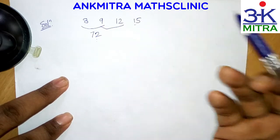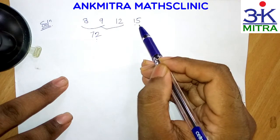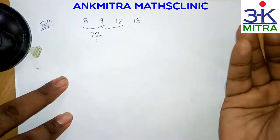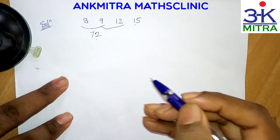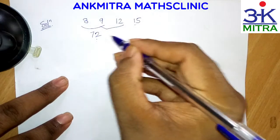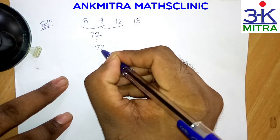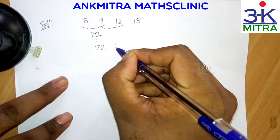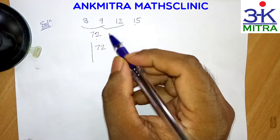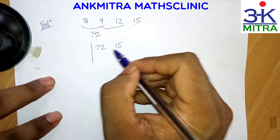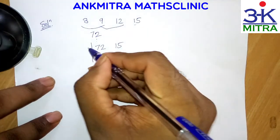Finally, for the fourth bell which rings after every fifteen minutes, we need to find the LCM of 72 and 15. We'll use the LCM division method for this, writing both numbers next to each other.